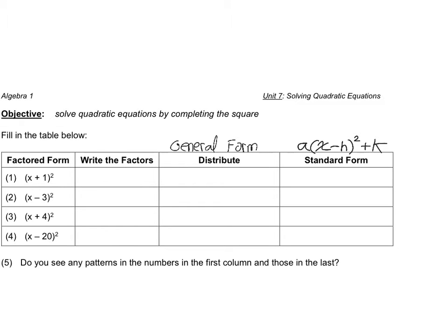We're going to write the factors. x plus 1 squared is actually already in factored form, just not written as separate factors. So I'll write it as x plus 1 times x plus 1. When you distribute it out, you get x squared plus 2x plus 1. And so this is a key ingredient, but it doesn't necessarily seem like we're doing anything different from what we've been doing before. We've just been practicing distributing and factoring.